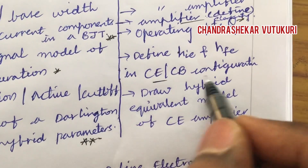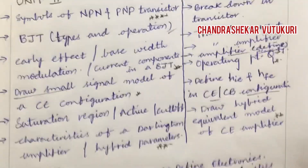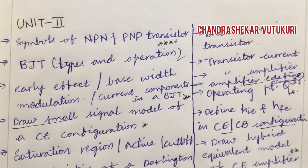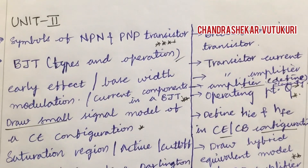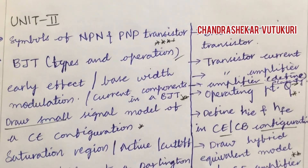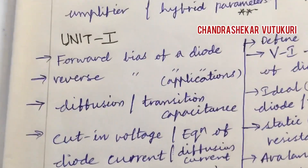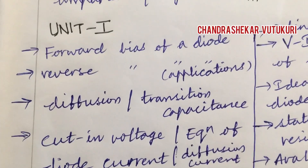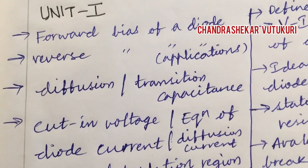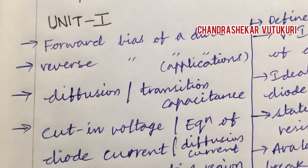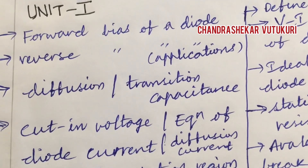Define HIE and HFE in CE and CB configuration. Draw the hybrid equivalent model of a CE amplifier. Dear students, you may feel there are lots of questions here, but as per the regular pattern you need to concentrate on each and every parameter — from which corner they will ask, I cannot guess and neither can you. I have come up with these to help all students be thorough with at least a minimum of three units so you can score well.